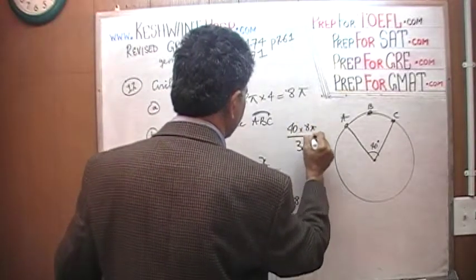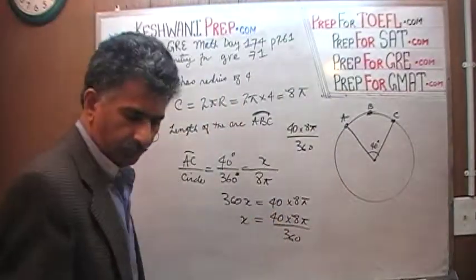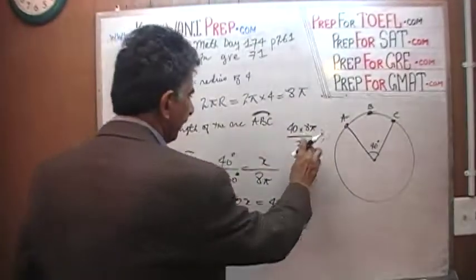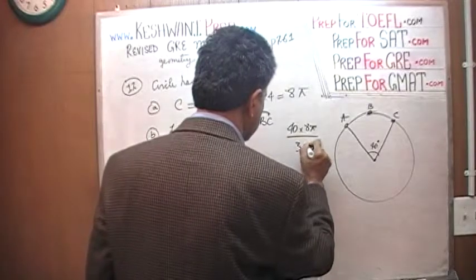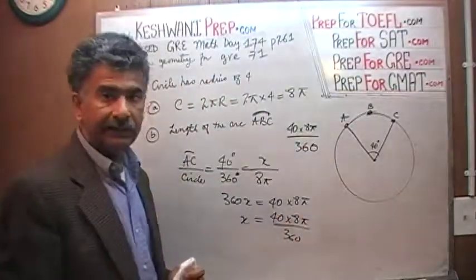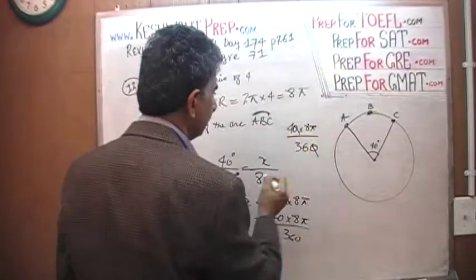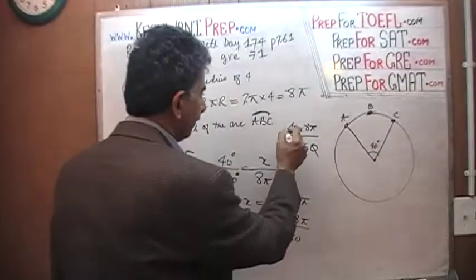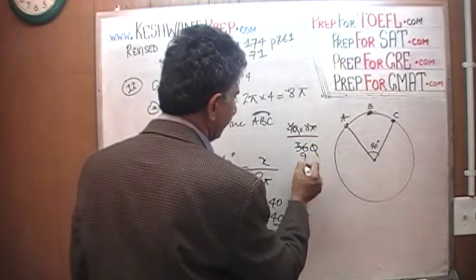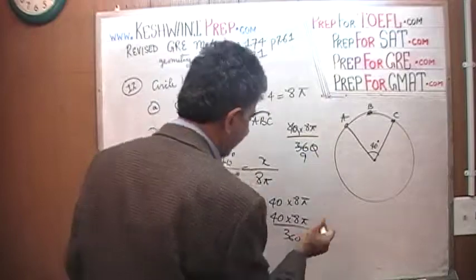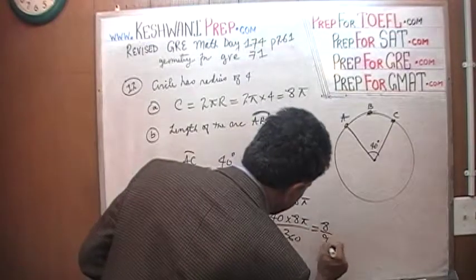40 times 8π over 360. Divide the top and bottom by 10 and you will get, divide the top and bottom by 4, 36 is 9 times 4, so you end up with 8π over 9, or 8 over 9π. Voila, that's it.